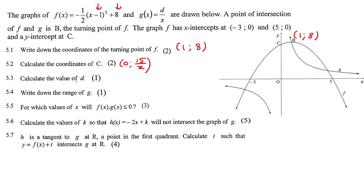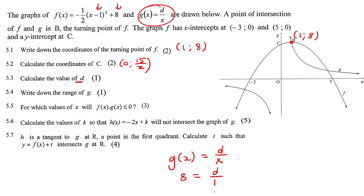Next question: calculate the value of d. We take g's equation and find a point on it. We can see that point b lies on g, so x=1 and y=8. Substituting those values in, d is 8.